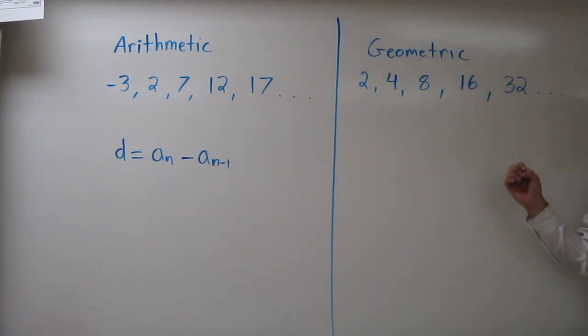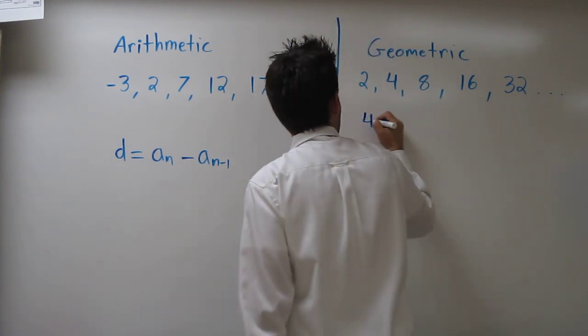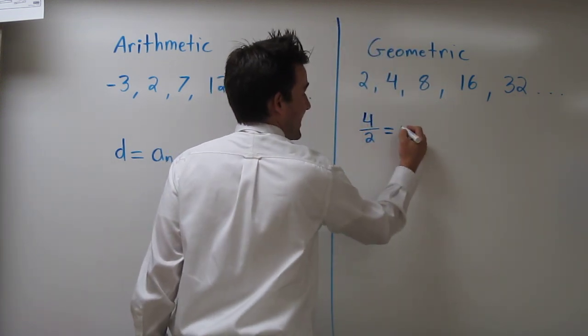Now geometric sequences don't have a common difference. They actually have a common ratio between a term and the previous term. So if we take the common ratio, or if we take the ratio of the 4 and the 2 here, we have 4 over 2, well that equals 2.